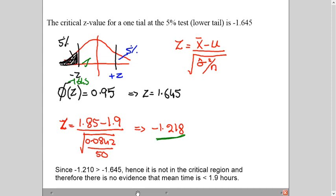So you will make a statement here. Okay, since minus 1.210 is greater than this, hence it is not in the critical region. And therefore, there is no evidence that mean time is less than this. Because you have to make a statement around less than 1.9 hours. So you are saying it is not less than 1.9 hours. I hope you understood the question. Thank you very much for watching this video. If you have learned something, press like and subscribe button and share it with your friends. Take care, Allah Hafiz.